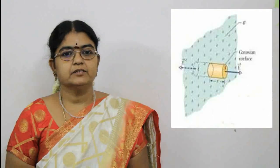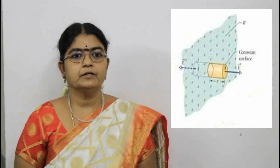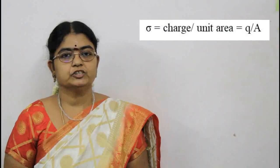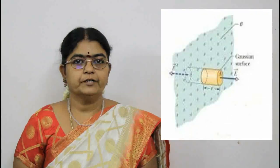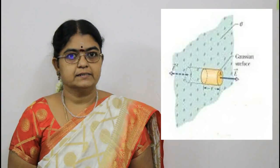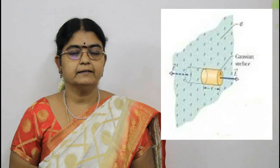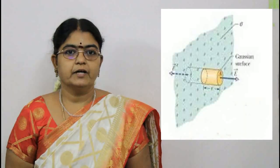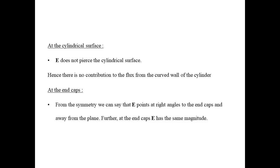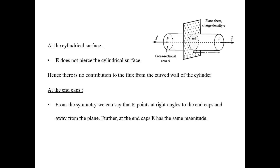Let us see the next application: infinite thin non-conducting sheet of charge. The figure shows a portion of a thin infinite non-conducting sheet with uniform positive surface charge density. Let us define the surface charge density sigma as charge per unit area. Here also, we are going to find the electric field at points near the sheet. We are going to choose a cylindrical surface as the Gaussian surface of area A; the cylinder pierces the sheet as shown in the figure. We also assume that the end caps are equidistant from the sheet. The electric field E does not pierce the cylindrical surface, hence there is no contribution to the flux from the curved wall of the cylinder.